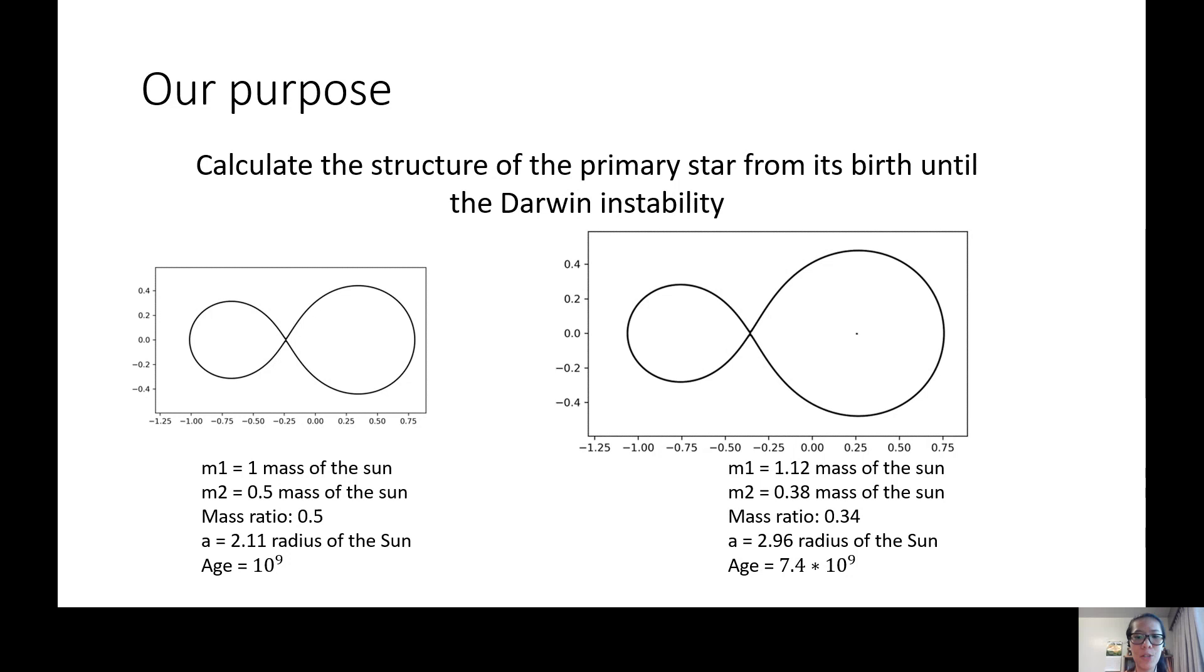We made sure to keep the binary system conserved in total mass and angular momentum. Our fundamental assumption is that the second star is fixed by the changes of the primary star, meaning the primary star is the leading element between the two in the merging process.